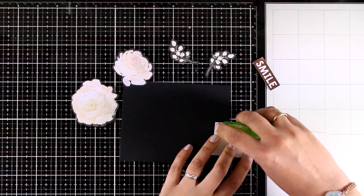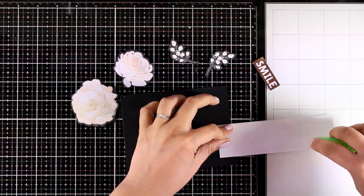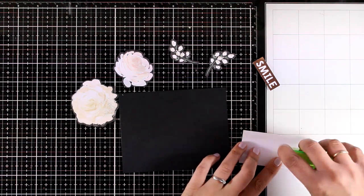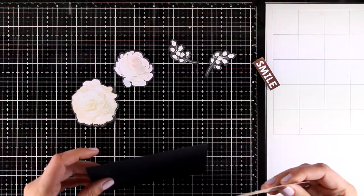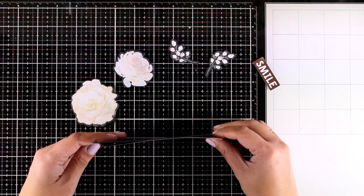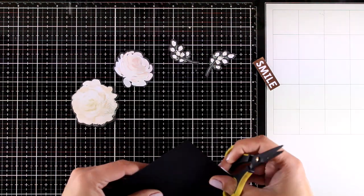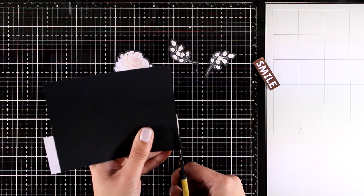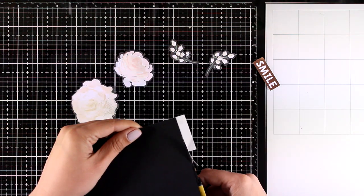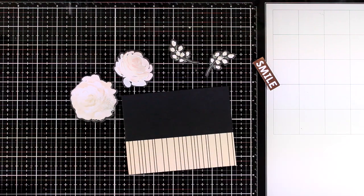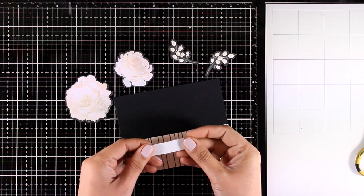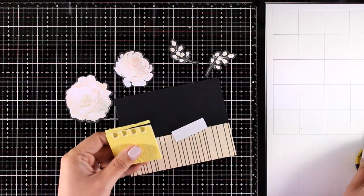Moving on to the second card for today. Here I have cut out a strip of one of the pattern papers and I'm going to place it on a panel that's 4.25 by 5.5 and it is from the black cardstock that was included in the kit. I'm going to use my scissors and chop off all the excess paper.